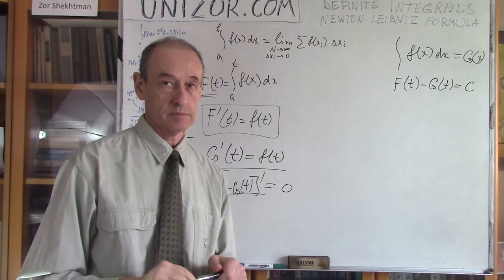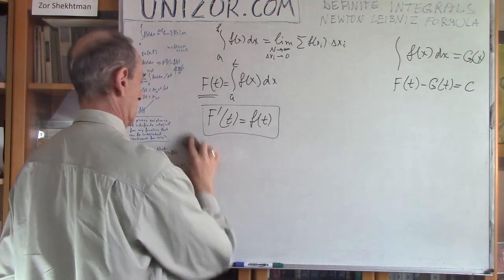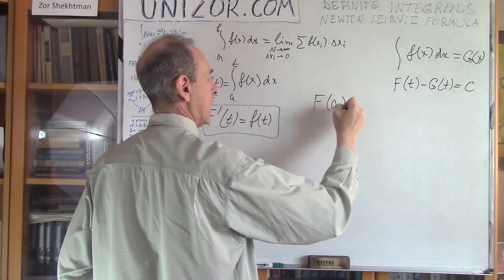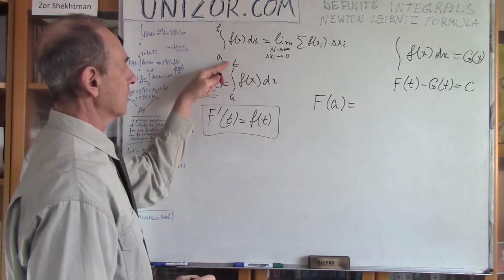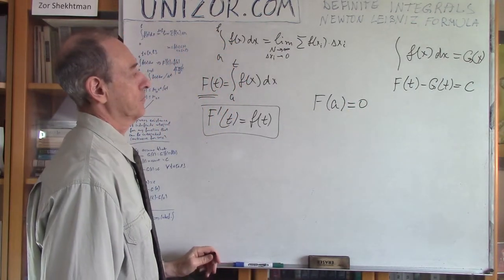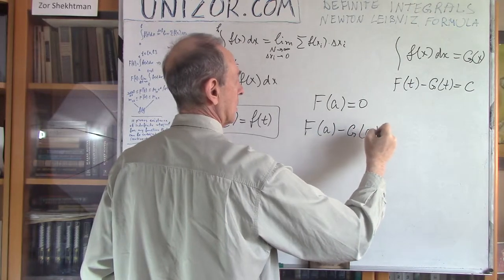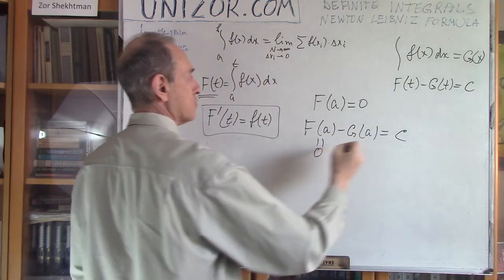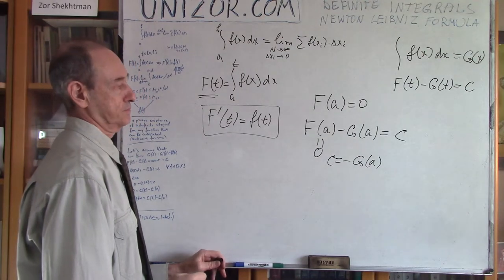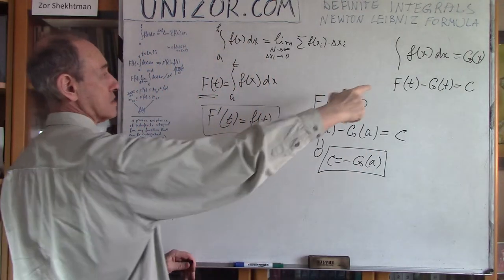Can we determine this constant? Yes, and it's easy to do. We know that F(a) equals zero — when the upper limit equals a, the integral is zero, by properties of definite integrals. Substituting a: F(a) − g(a) = C. Since F(a) = 0, we get C = −g(a).